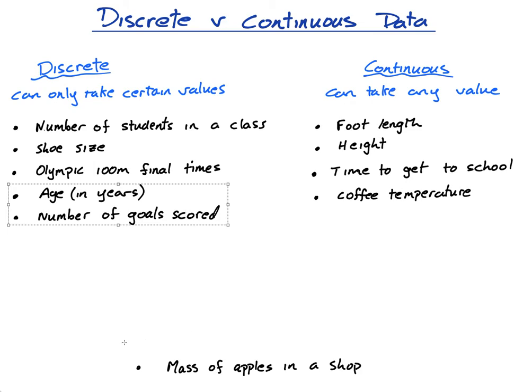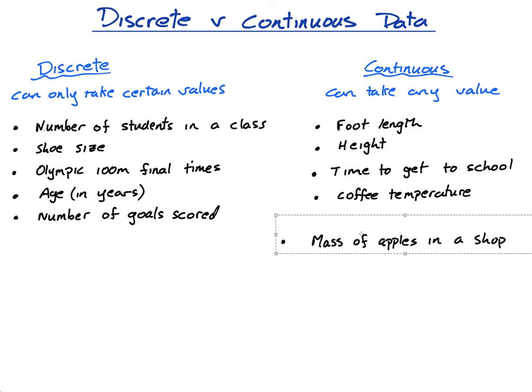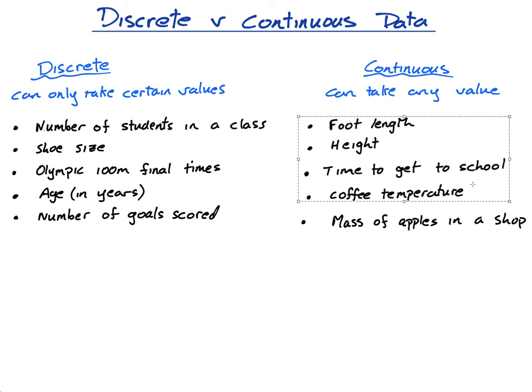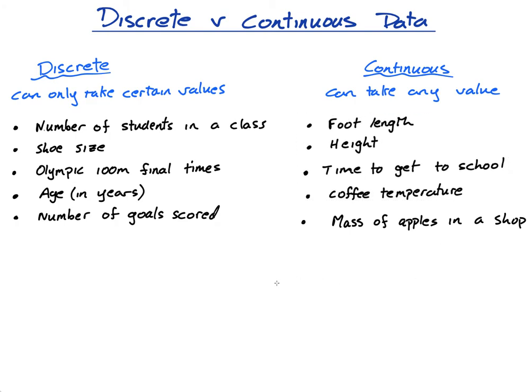The mass of apples in a shop — mass is continuous because it doesn't jump. It's not like one apple is exactly 60 grams and another is exactly 62 grams. A shop might weigh it to the nearest gram, but really the mass of an apple is continuous — you could have an apple that weighs 6.12345678 grams or whatever.